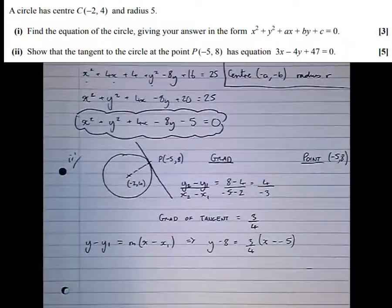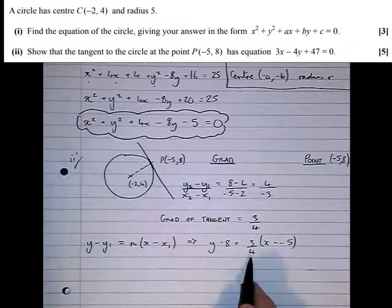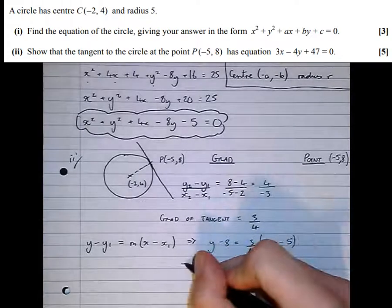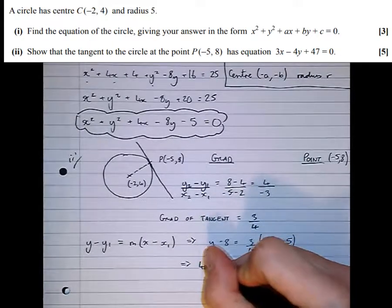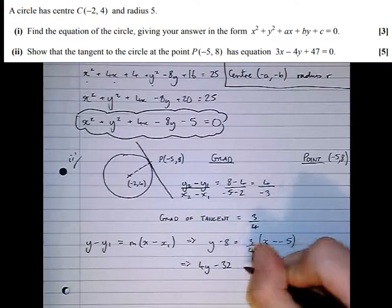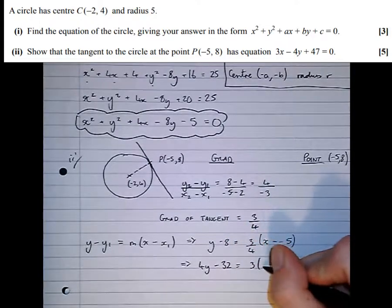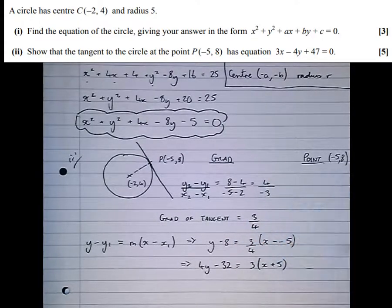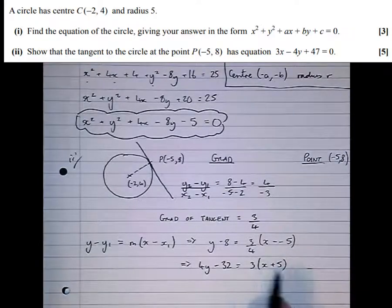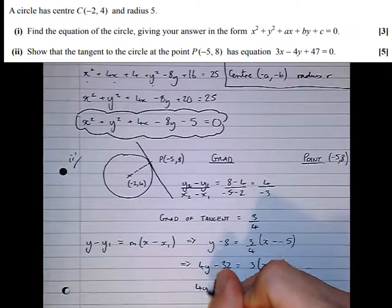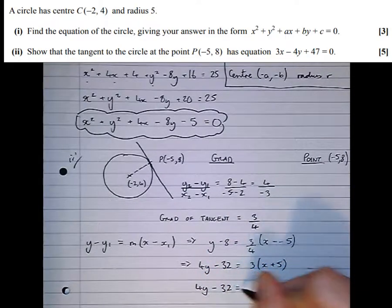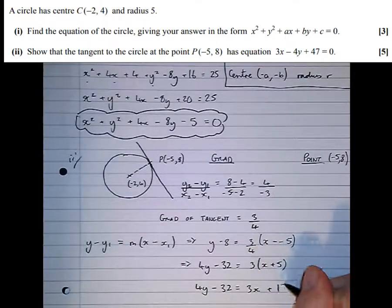So we'll do that, which gives us 4y - 32 = 3(x + 5). Much easier to multiply out these brackets now: 4y - 32 = 3x + 15. We're almost there.